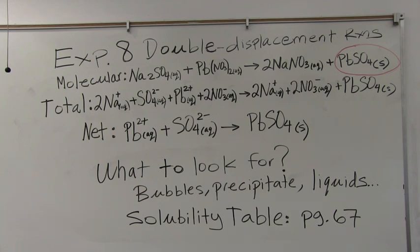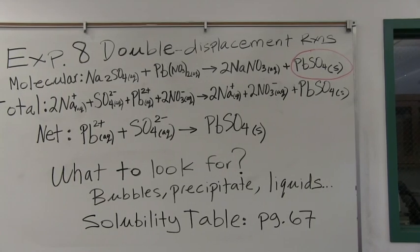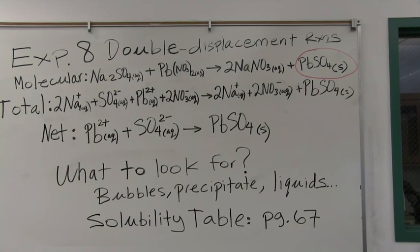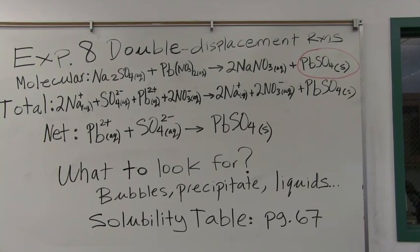aqueous sodium sulfate and also lead 2 nitrate, aqueous lead 2 nitrate. That's on the left hand side of the equation. On the right hand side of the equation you have sodium nitrate and also lead sulfate.